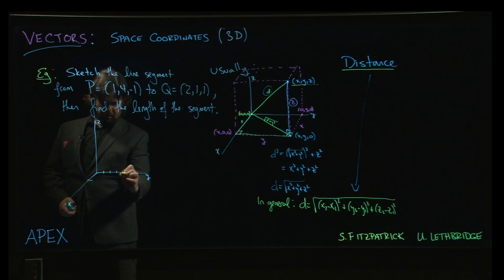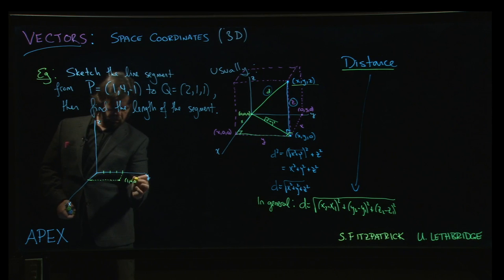3, 4 units in the y-direction. So we think about kind of drawing it like that. And that gets us to the point 1, 4, 0.